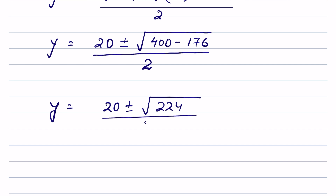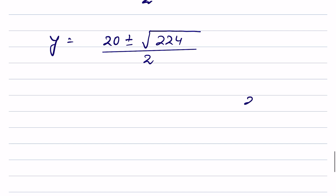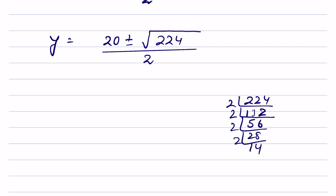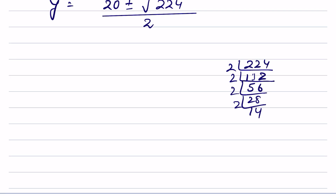Now let's factorize 224. We have: 224 equals 2 times 112, 112 equals 2 times 56, 56 equals 2 times 28, 28 equals 2 times 14. So 224 equals 2 squared times 2 squared times 2 squared times... we can group these pairs of 2s under the square root.